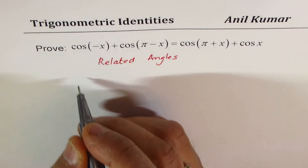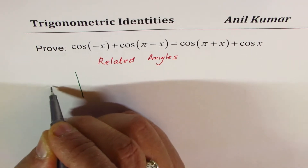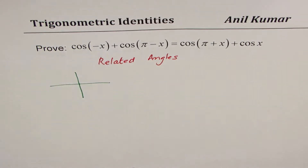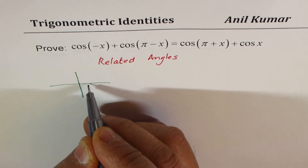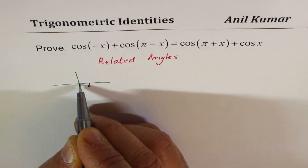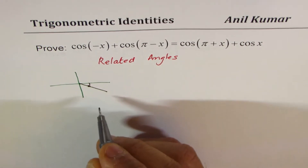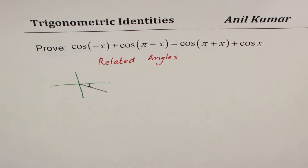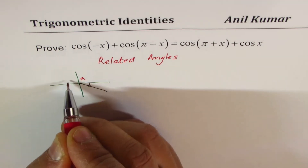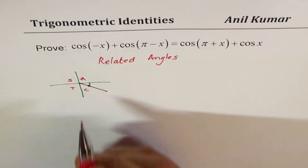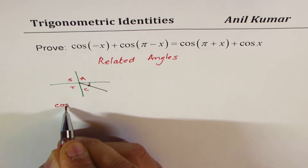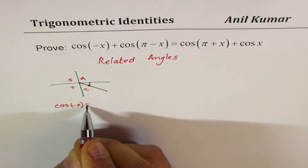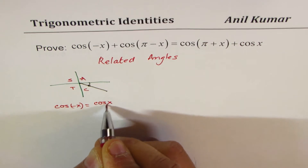Let's begin to understand how to write these in terms of related acute angles. The first term is cos(-x). We are in quadrant 4. Since cosine is positive in quadrant 4 — following the rule that all functions are positive there — cos(-x) can be related as cos(x).